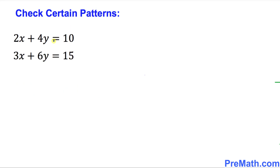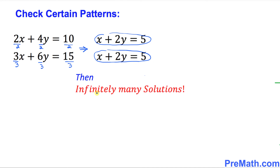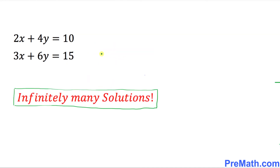Here is our last example. If we divide the first equation by 2 across the board, and the second equation by 3 across the board — since both equations are divisible by their respective constants — then both equations turn out to be identical: x plus 2y equals 5. As long as the two equations are identical, we are going to have infinitely many solutions to this given system of equations.